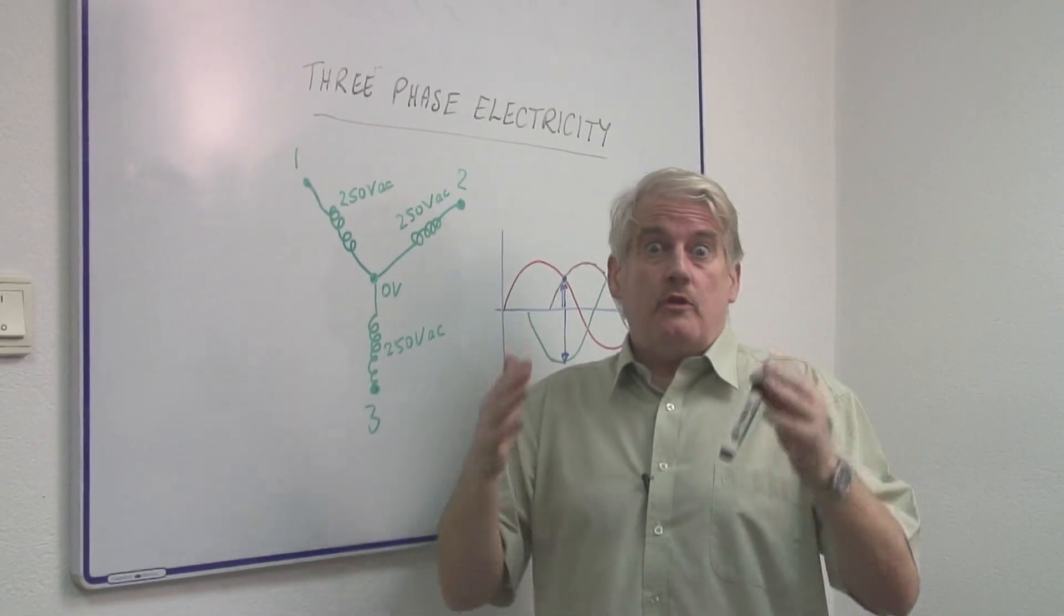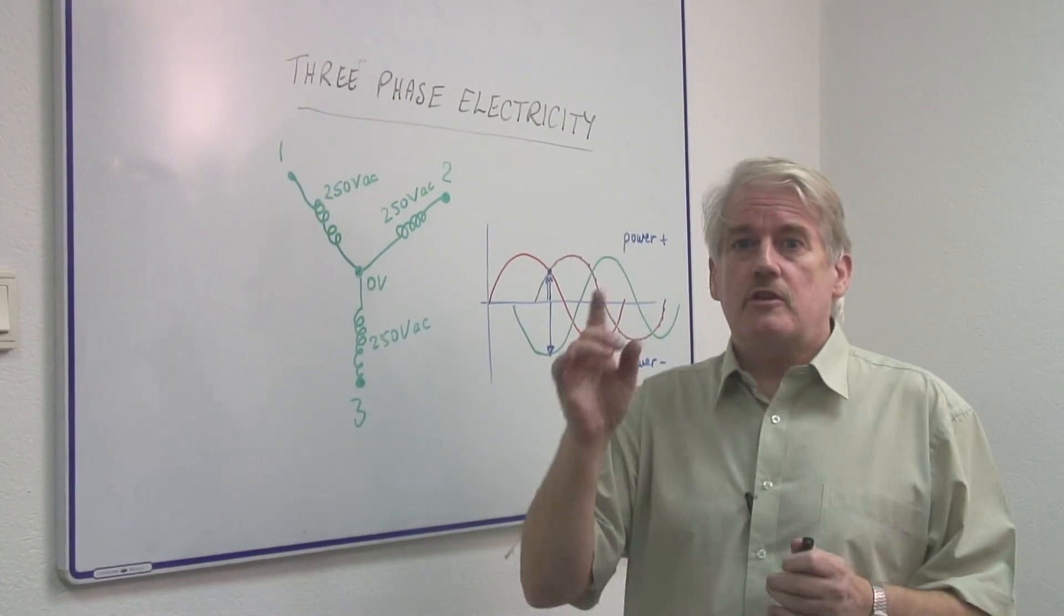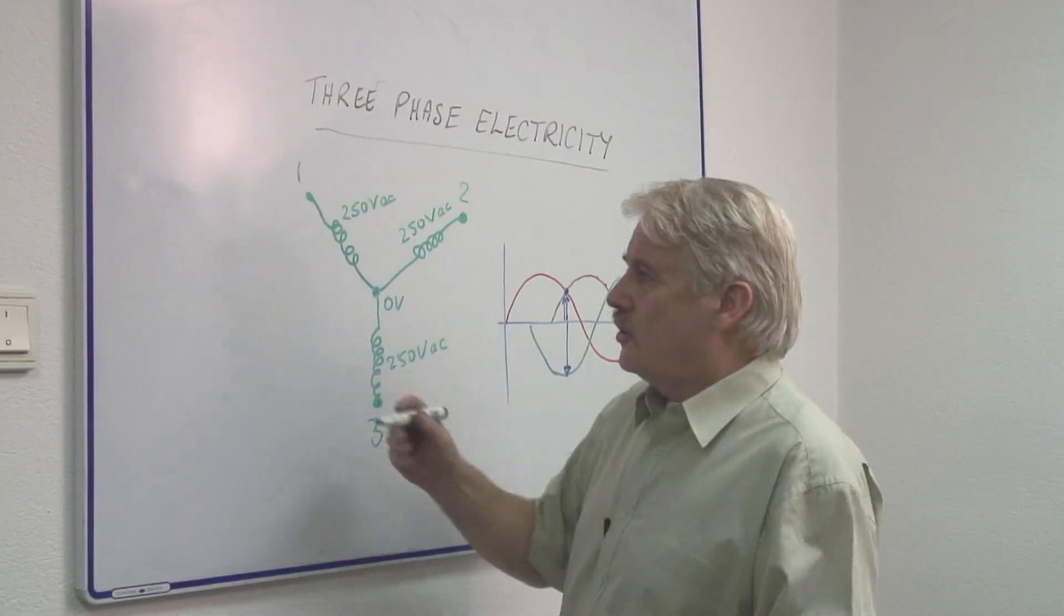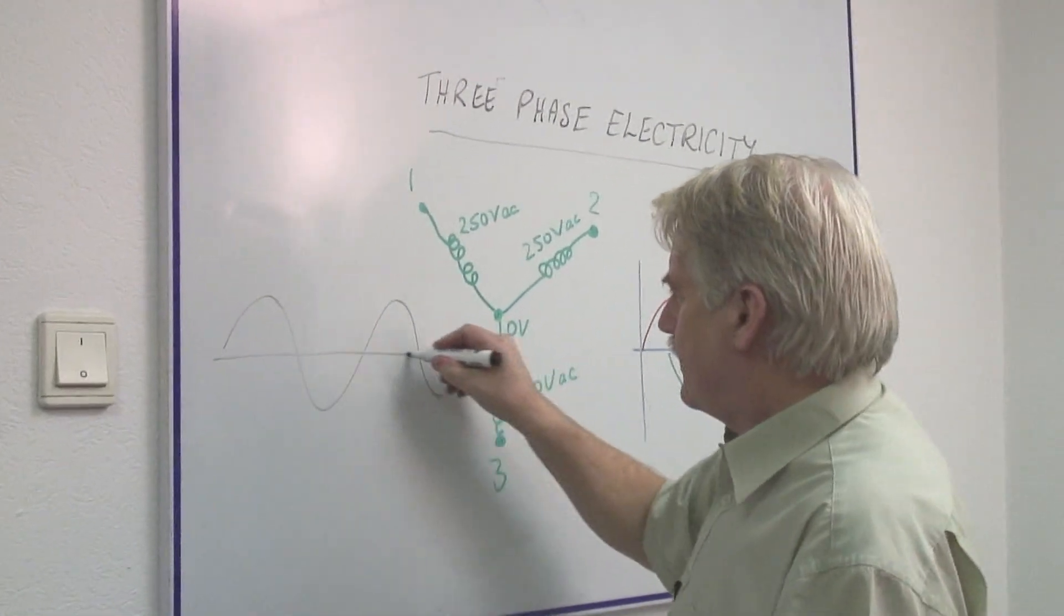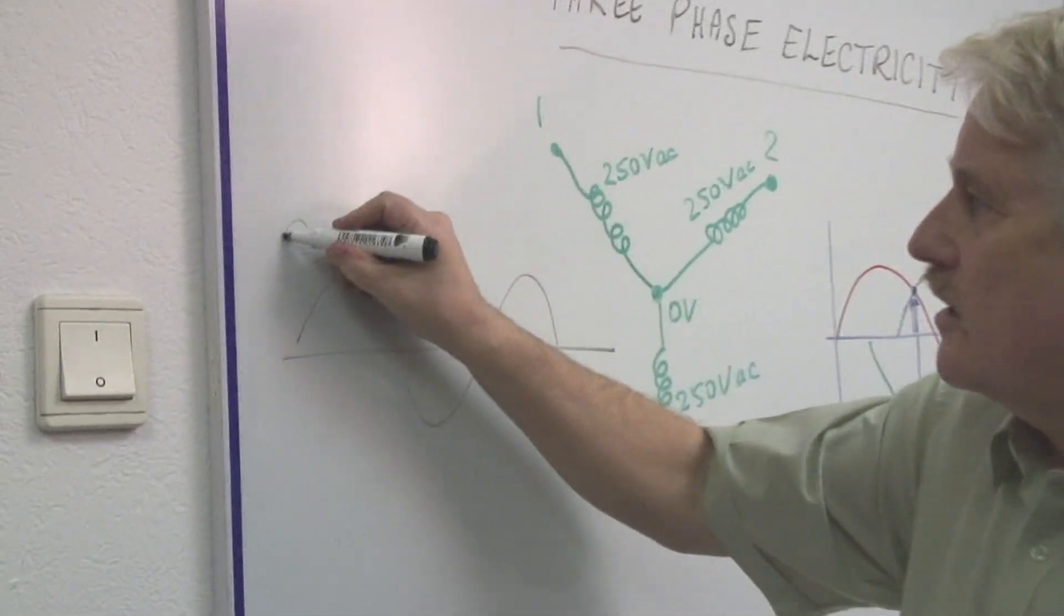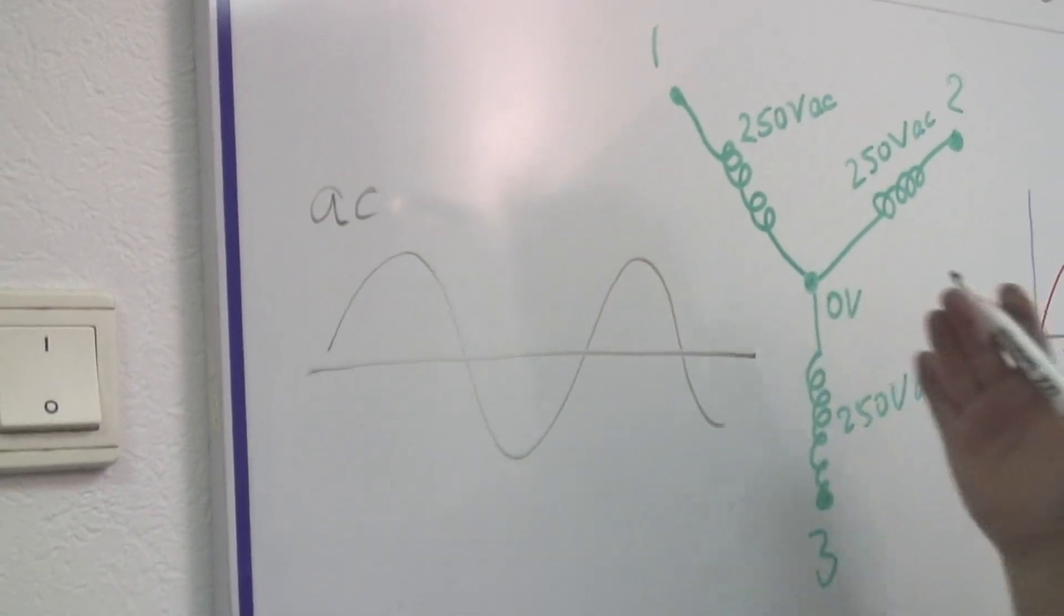Well, in your home you don't use it. You use single-phase electricity. You use electricity which people will draw like that. That is, it's alternating current and the current is going backwards and forwards.